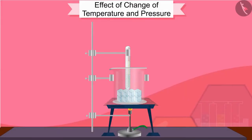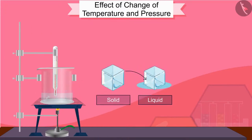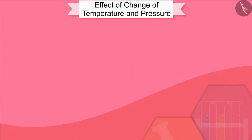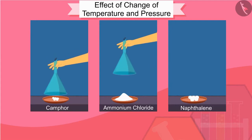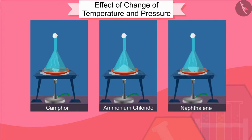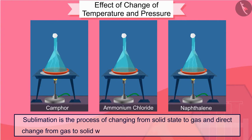By this activity, we can conclude that by changing the temperature, we can change matter from one state to another — solid to liquid and liquid to gas on heating. But do all matters follow this rule? No. There are some substances such as camphor, ammonium chloride, and naphthalene that convert directly from the solid state to gas without being converted into a liquid state. Sublimation is the process of changing from solid state to gas; the direct change from gas to solid without changing into liquid is called deposition.